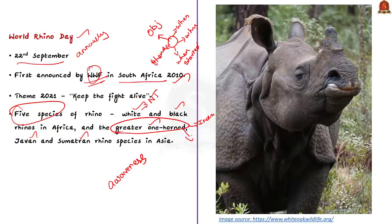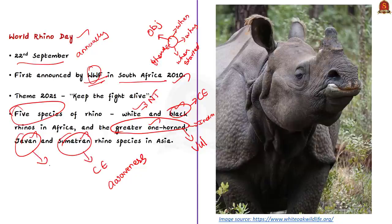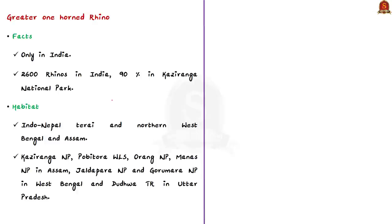UPSC might ask you to match the rhino with its IUCN red list status. The theme for 2021 World Rhino Day is 'Keep the Five Alive.' The objectives of World Rhino Day are: strengthening protection, expanding the distribution range, enabling research, and providing additional and sustained funding for the conservation of world rhinos. Note all five points regarding World Rhino Day as UPSC will ask questions from these.